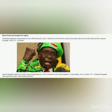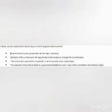Hence from the above discussion we come to know: Democracy is a form of government in which rulers elected by the people take all the major decisions. Elections offer a choice and fair opportunity to the people to replace the current rulers. This choice and opportunity is available to all people on an equal basis. The exercise of this choice leads to a government limited by basic rules of the constitution and citizens' rights.